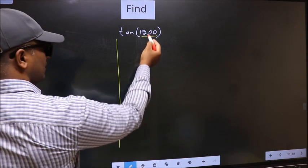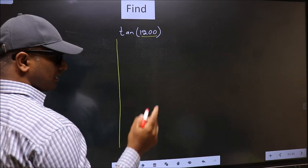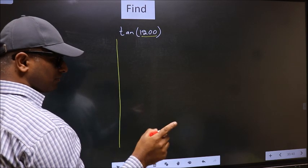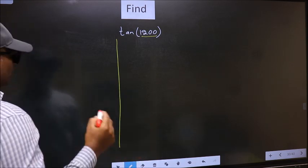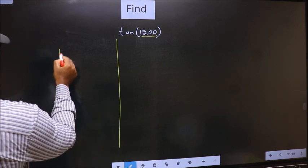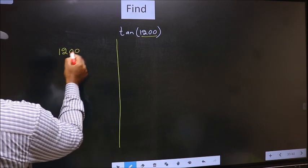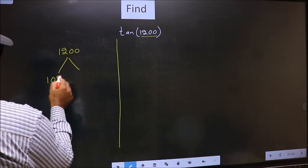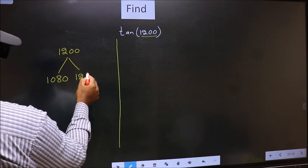Now we should check 1200 lies between which two multiples of 180. What I mean is 1200 lies between 1080 and 1260.